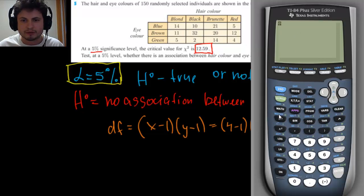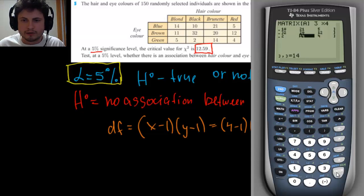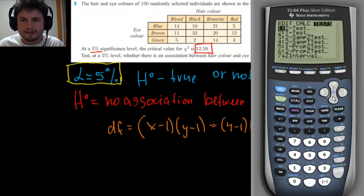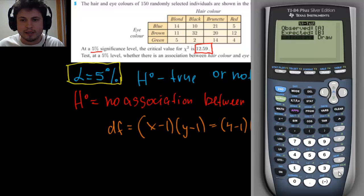To do this, go to the matrix, which is second X to the power of minus one, then go to edit and change your matrix. This is a three-by-four matrix — three rows and four columns — just like in your picture. Enter the values into each cell, starting with 14 and so on. Then go to Stats > Tests, scroll down to chi-square test, click on it, leave observed and expected values as-is, and click calculate to get your answer.